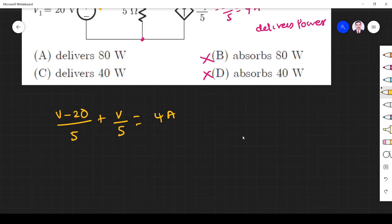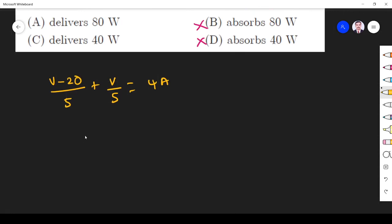So now if we simplify what is the value of V. So this V will go that side. So 2V minus 20 is equal to V minus 20. Okay, 2V minus 20 is equal to 20. 2V is equal to 40. V is equal to 20 volt.